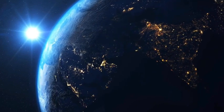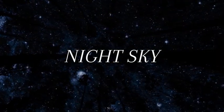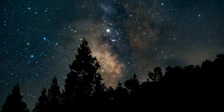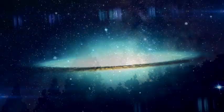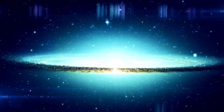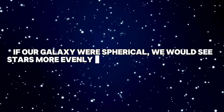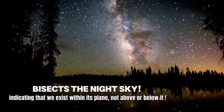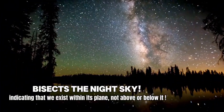To understand our galaxy's true structure, it's imperative to start with the night sky. It offers our first clues, showing us a faint glowing band of stars, a celestial ribbon we recognize as the Milky Way. This band suggests that we live within a flattened disk rather than a spherical structure. If our galaxy were spherical, we would see stars more evenly distributed across the sky. The band bisects the night sky, indicating that we exist within its plane, not above or below it.